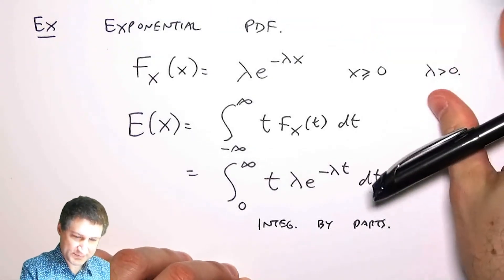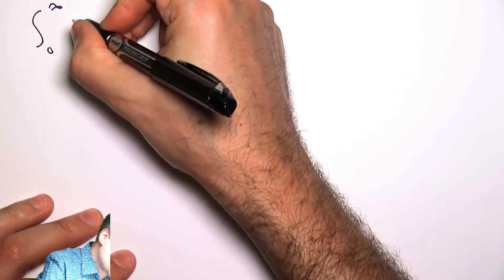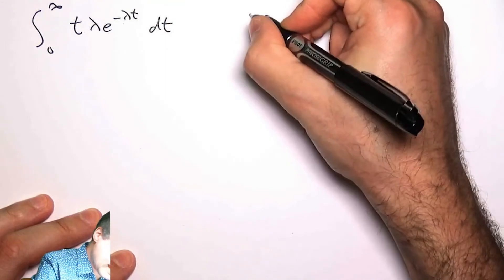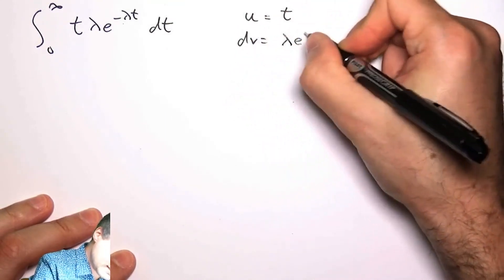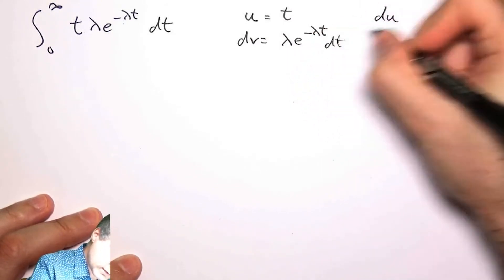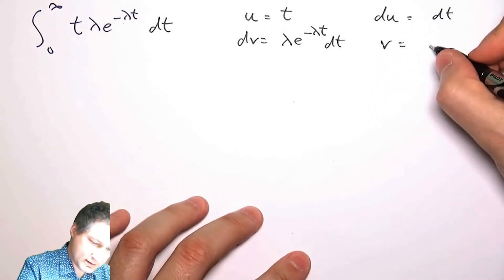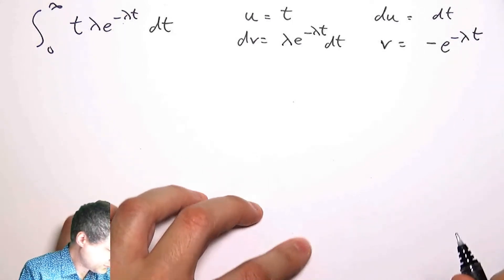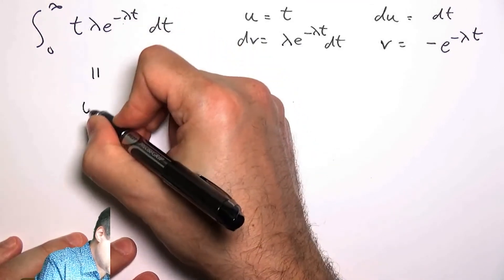So let's just do that on a separate piece of paper. So this is the integral I need to solve. I can say, okay, my u part is going to be t. My dv part is going to be lambda e to the minus lambda t. That means my du is going to be dt. And my v is going to be minus e to the minus lambda t.